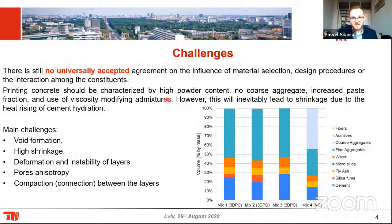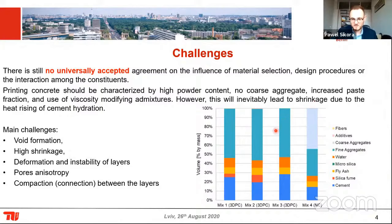This is a big challenge in 3D printing of concrete because there is no standard, no universally accepted agreement on what kind of material or design procedure to use to develop such a concrete mixture. Here is an example of three mixtures used for 3D printing compared to normal concrete. What is important in 3D printed concrete is that we have a huge amount of powders — cement, additives, silica fume, fly ash — and we have only fine aggregate, a small sand portion.